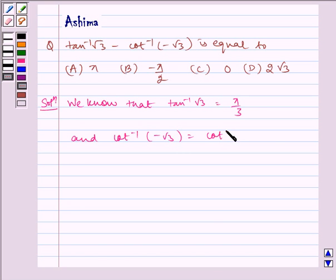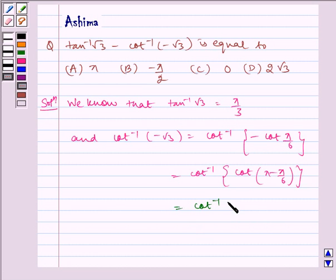is equal to cot inverse of minus cot pi by 6, which is equal to cot inverse of cot (pi minus pi by 6), which is equal to cot inverse of cot (5 pi by 6), which is equal to 5 pi by 6.